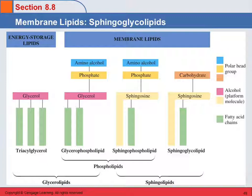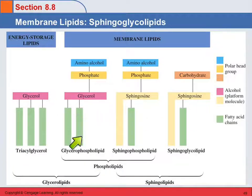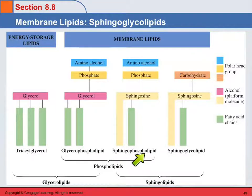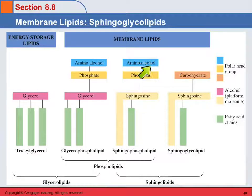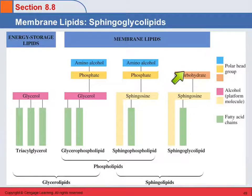Here's a summary slide showing our energy storage lipids — the triacylglycerols — and the different kinds of membrane lipids. The glycerophospholipid uses glycerol as the platform; the sphingophospholipid uses sphingosine. Both are phospholipids because they have a phosphate alcohol group, which forms the polar head while the fatty acid chains are the nonpolar tails. The triacylglycerol is all nonpolar. The sphingoglycolipid also has sphingosine but has a carbohydrate group instead of a phosphate alcohol. They're all related, yet all different.